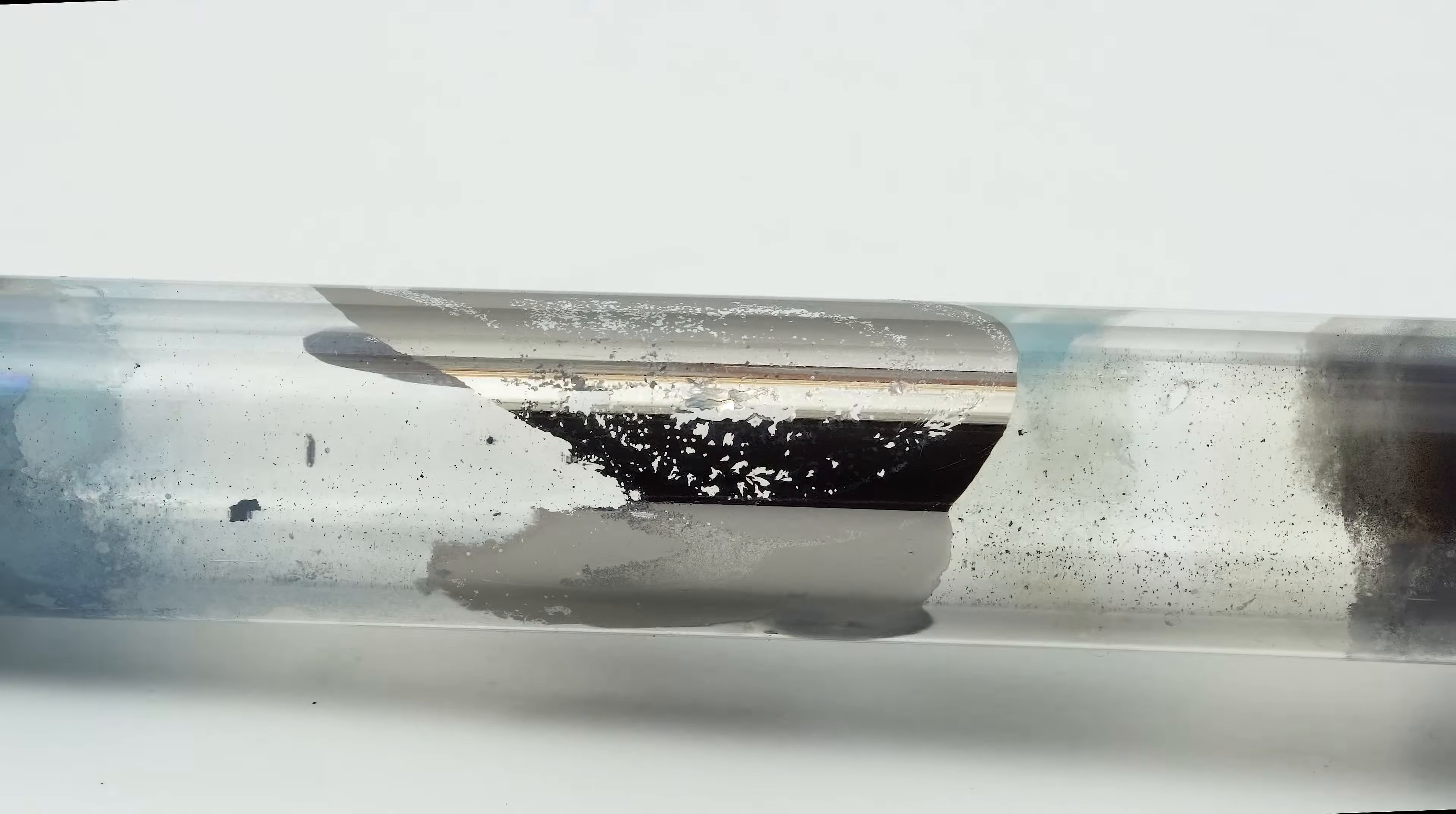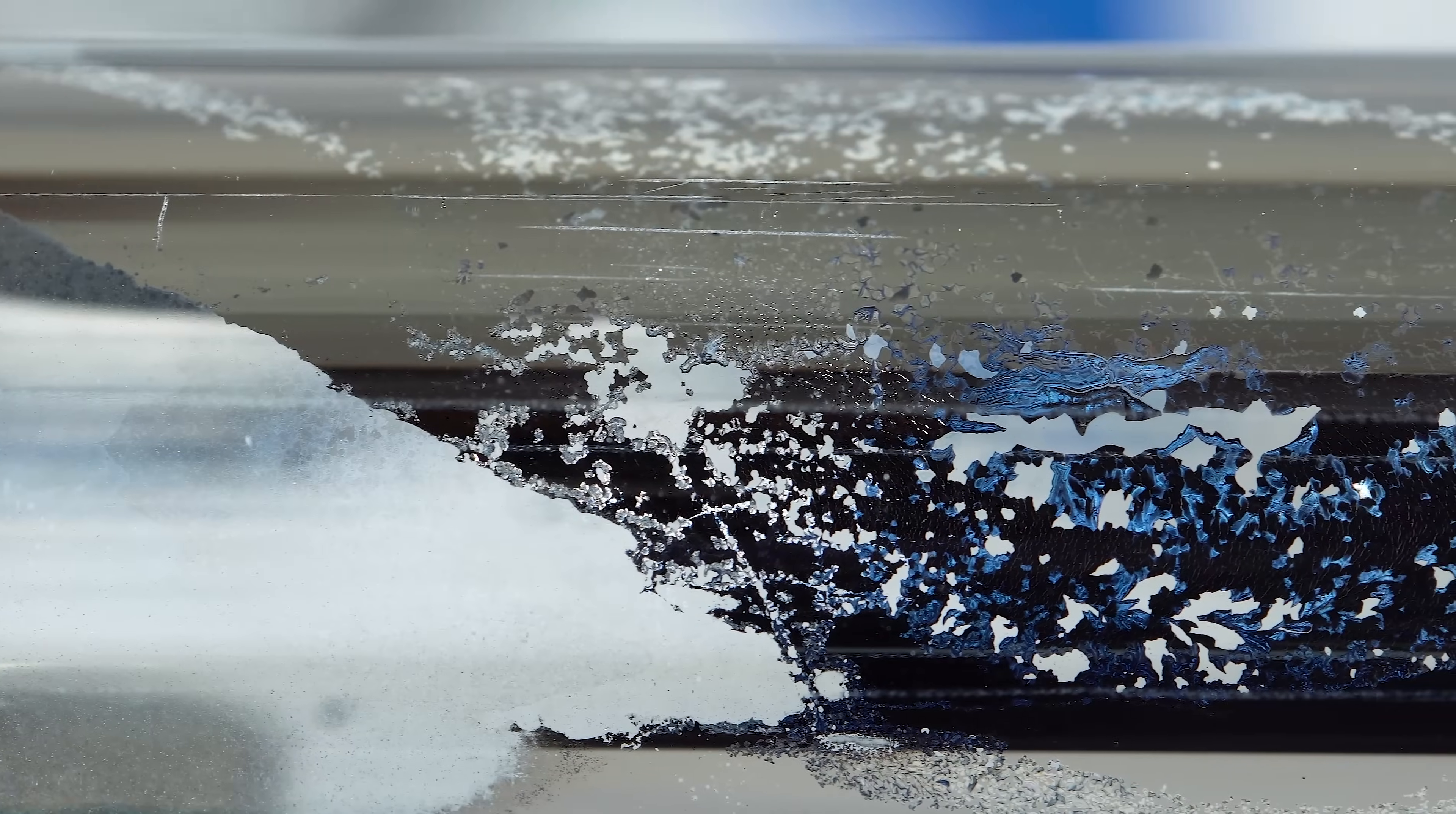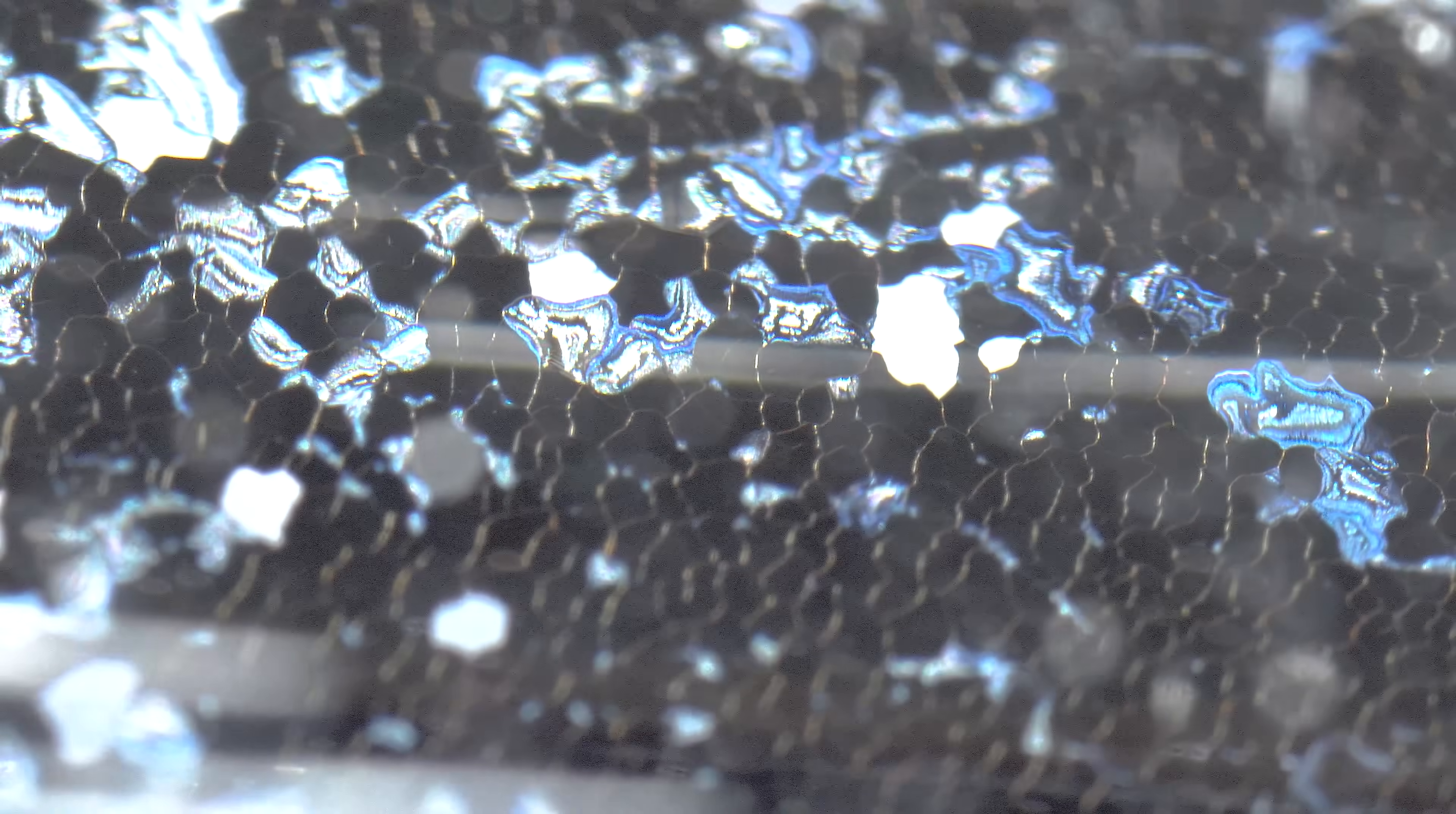After all the tungsten hexachloride was used, we got this tungsten mirror. Unlike a perfectly pure tungsten hexacarbonyl mirror, the tungsten hexachloride mirror may display bluish tint in certain areas due to impurities of reduced tungsten compounds, which can affect the coating's quality.